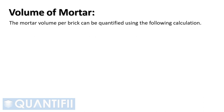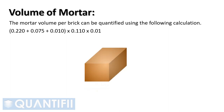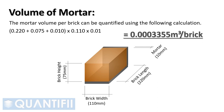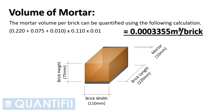The mortar volume per brick can be quantified using the following calculation: open bracket, 0.22 meters for the brick bed length, plus 0.075 meters for the perp end height, plus 10 mm for mortar to fill the void below the perp end, close bracket, multiplied by 0.11 meters for the width of the brick bed, multiplied by 10 mm for the mortar joint thickness. This gives us a mortar volume of 0.0003355 cubic meters per brick.